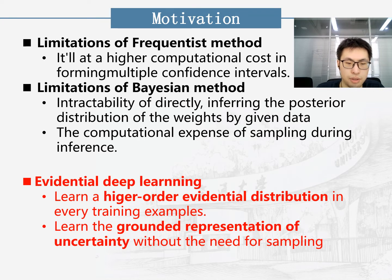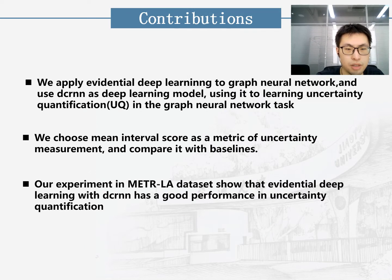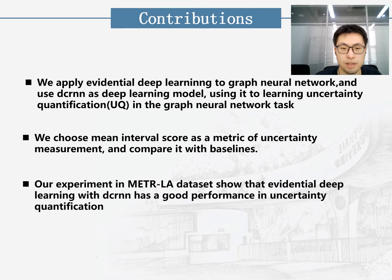In contrast, evidential deep learning formulates learning as an evidence acquisition process, which can obtain uncertainty quantification by placing evidential priors over the original Gaussian likelihood function. We can then train the neural network to infer the hyperparameters of the evidential distribution without sampling. Since Bayesian and frequentist methods have already achieved good performance on uncertainty quantification in graph neural networks, we try to apply evidential deep learning to graph neural networks to provide uncertainty quantification of output predictions.